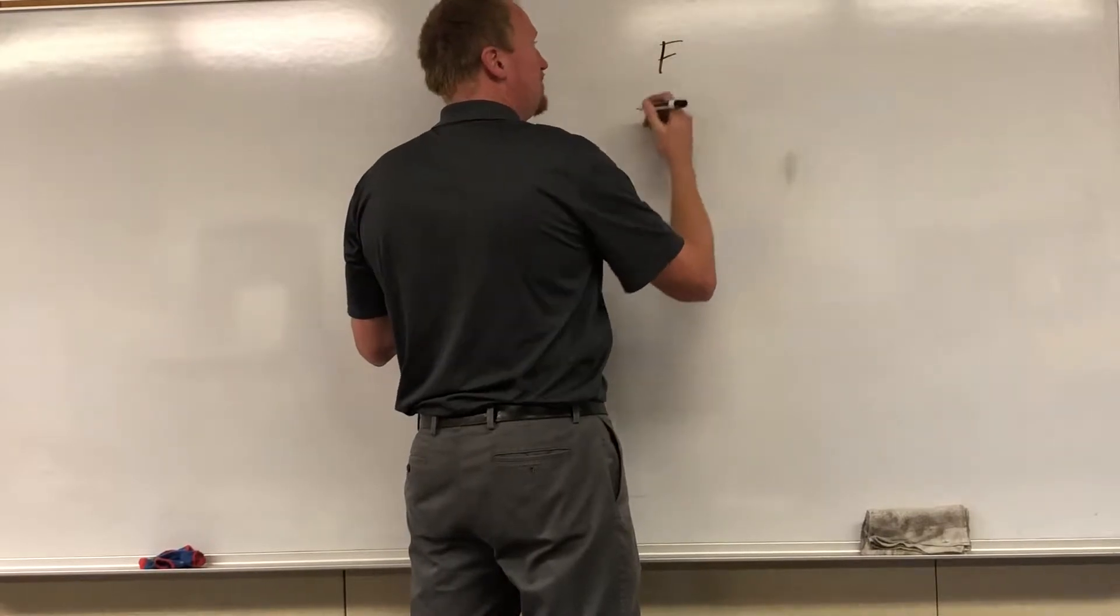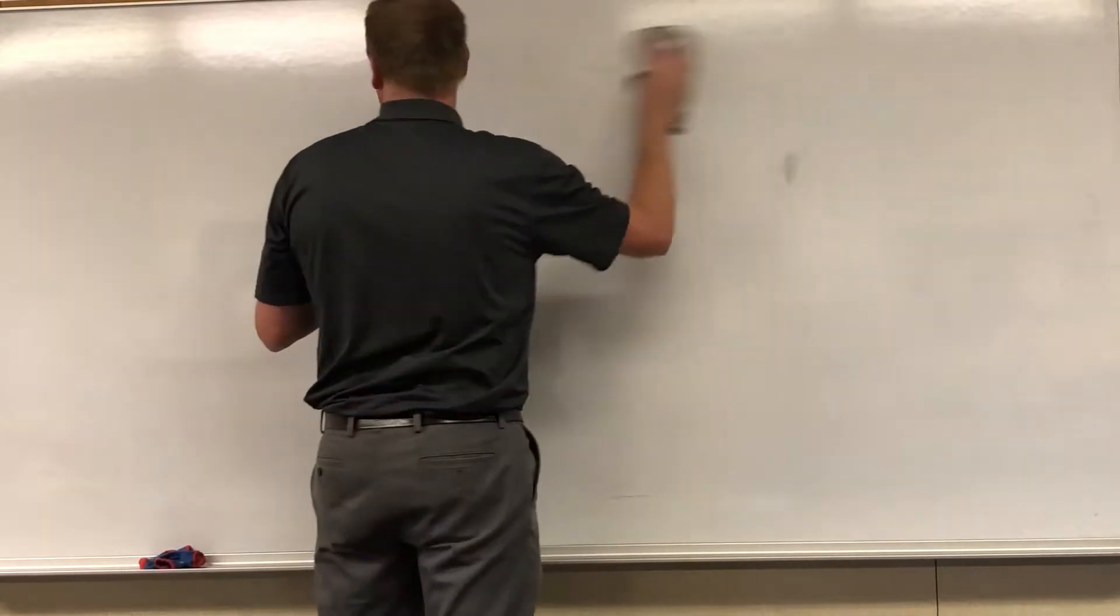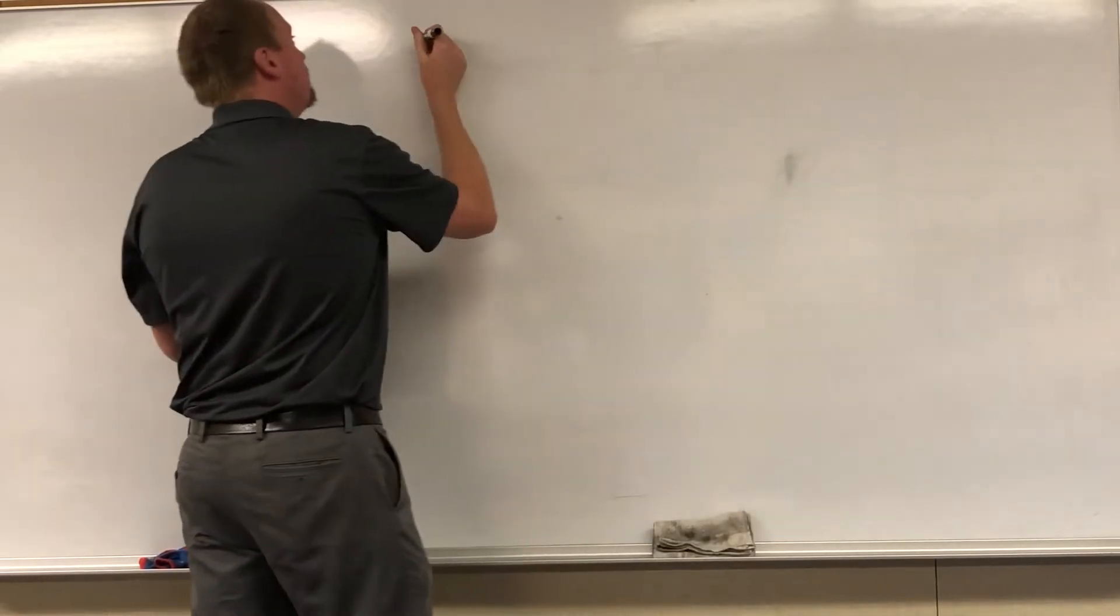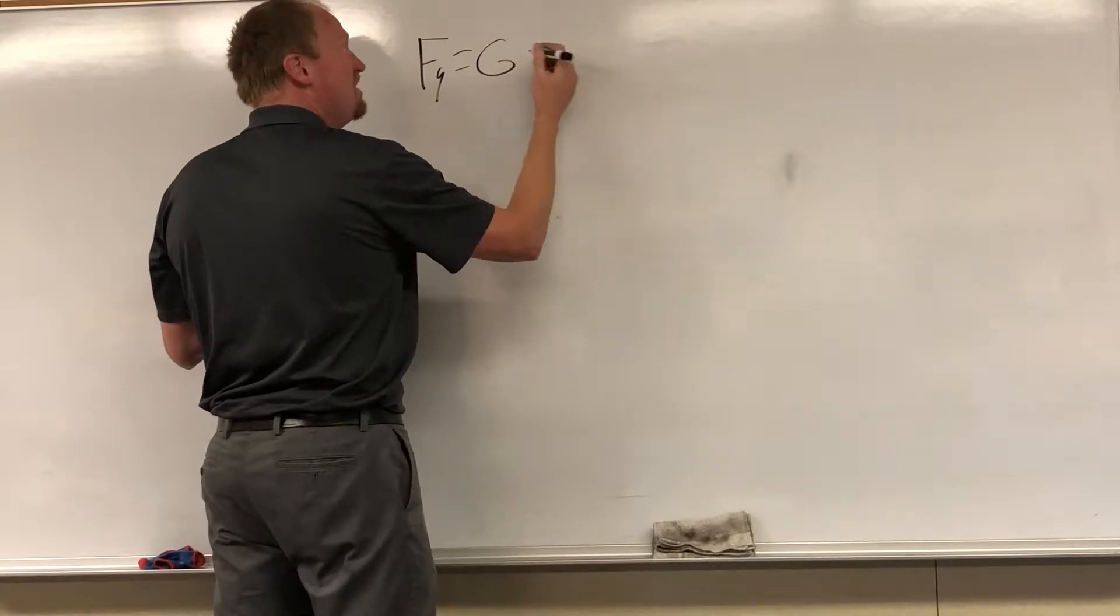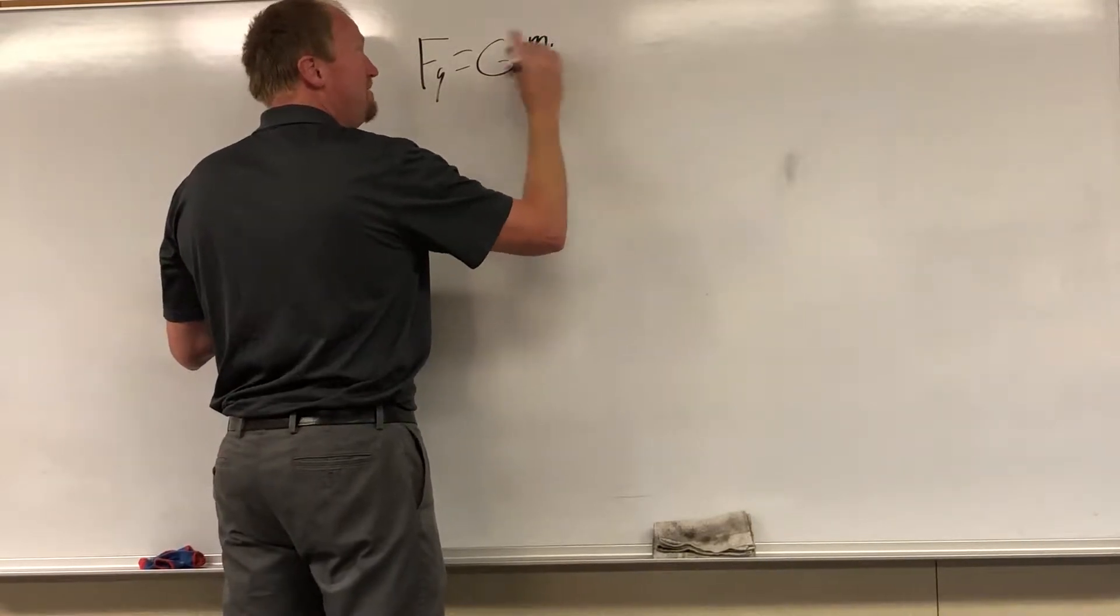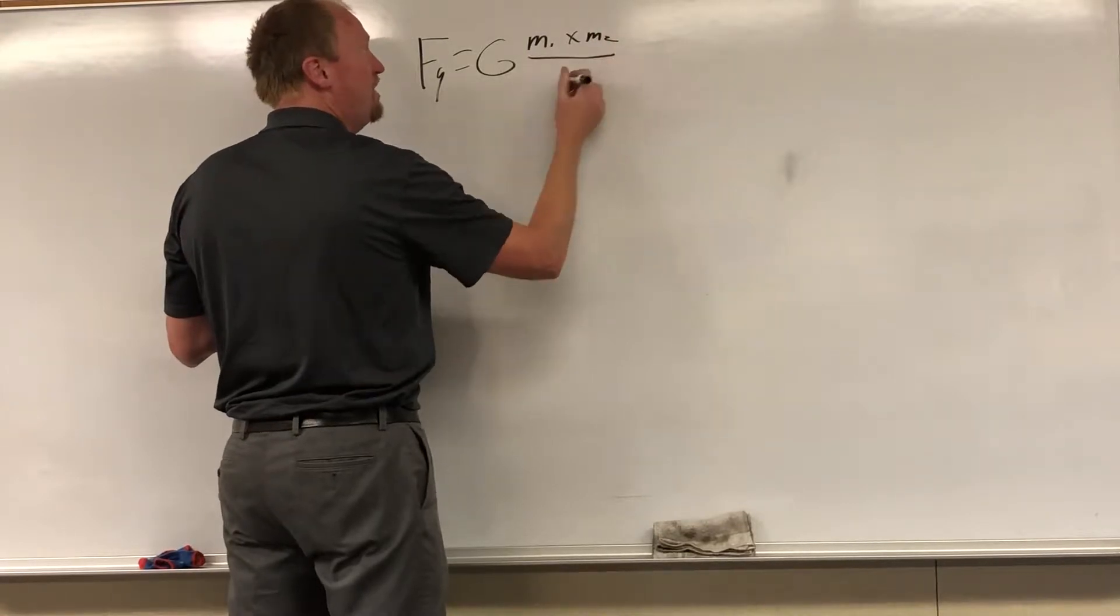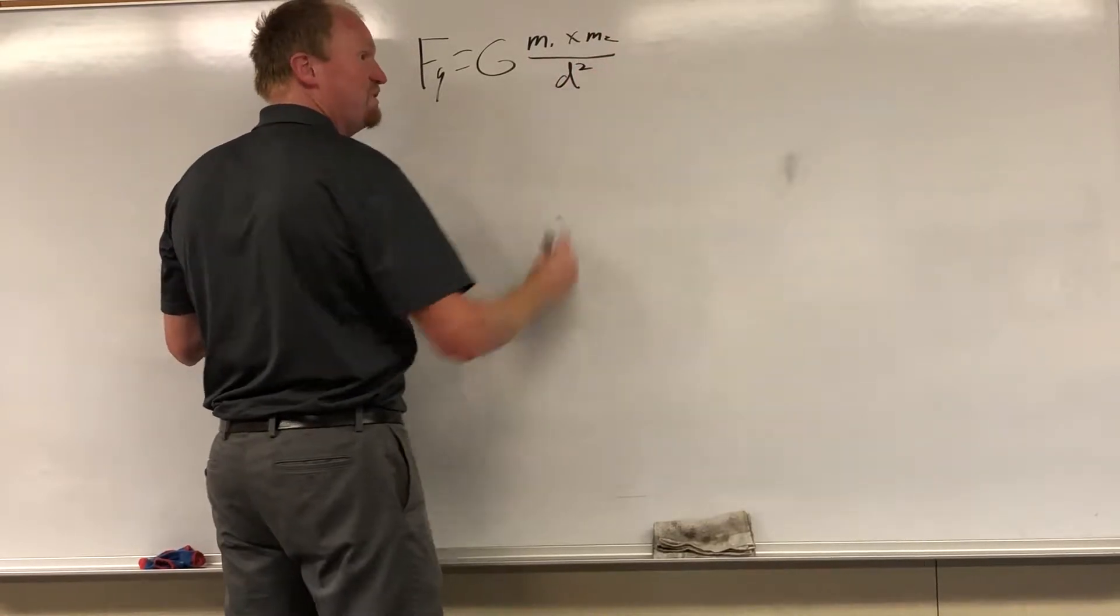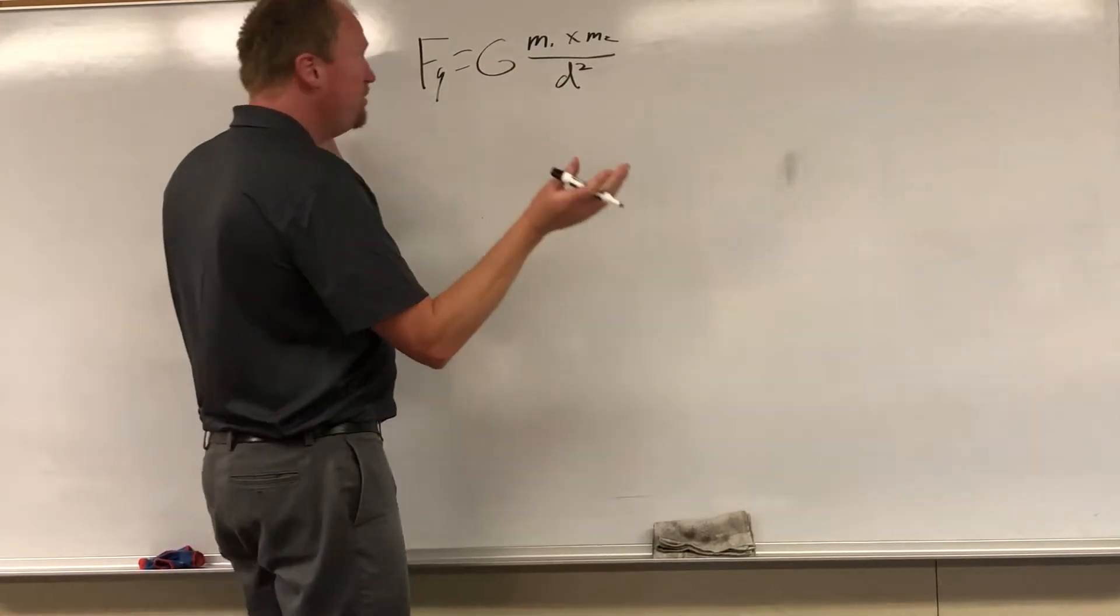So the formula is force of gravity. Hold on, let me put that over here. Force of gravity is equal to the gravitational constant times m1, that would be my mass, times m2, the mass of the Earth, over the distance between us squared.